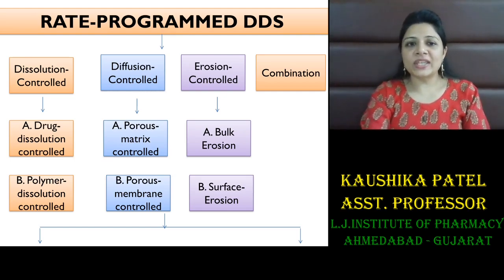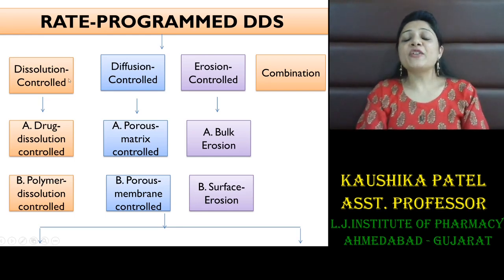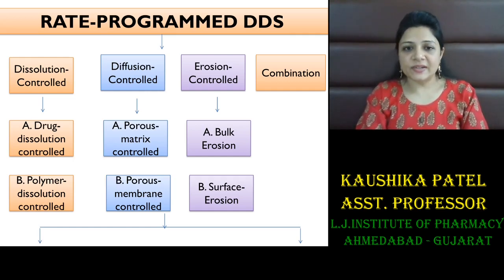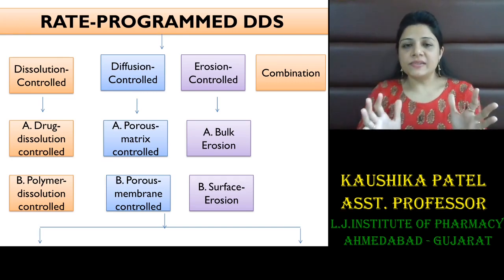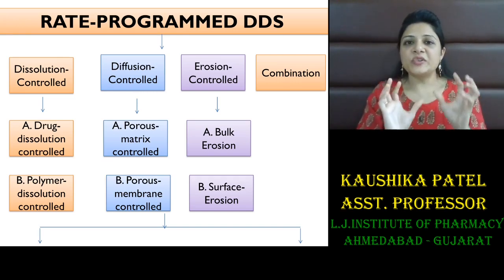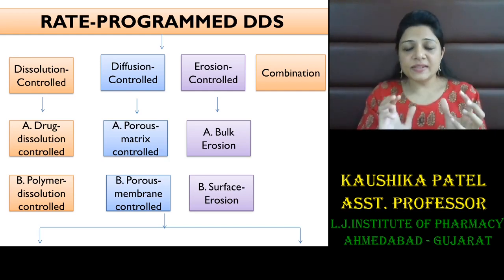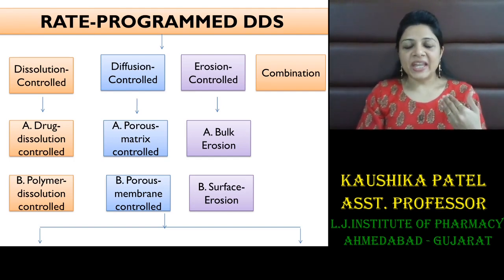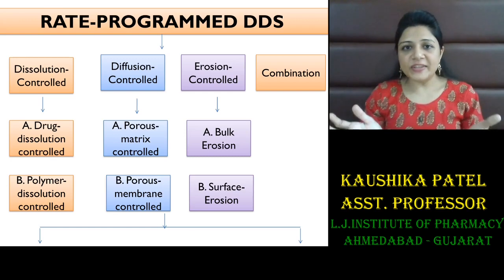That can be done in three ways: either you can have a dissolution control system, a diffusion control system, or an erosion control system. In dissolution control, you can control the dissolution rate of the drug or polymer. In diffusion control, you can have a matrix system or reservoir system. In erosion control, you can have bulk erosion or surface erosion.